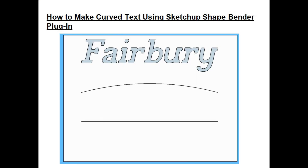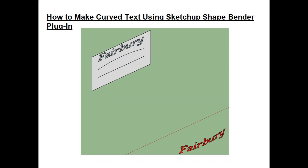When I was first using the program I had a different configuration — the text at the top, then below it the curved line, and below that the straight line. I selected the text, went into the plug-in, chose the straight line and curve line, and hit Enter. The new curved text disappeared completely from the screen — I thought, what the heck is going on? When I zoomed out far enough, I discovered the curved text down in the bottom right-hand corner, and it was not curved in the right plane — it was curved in the wrong plane. It's rather bizarre how that works.